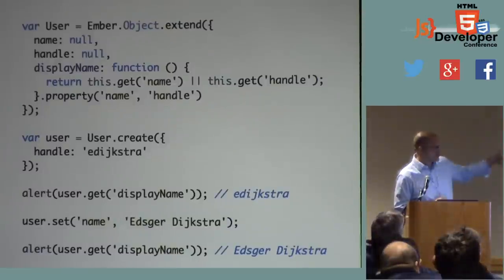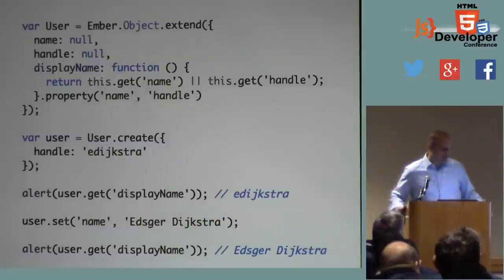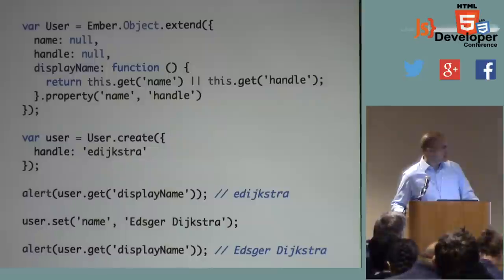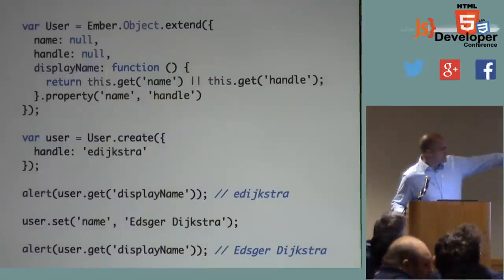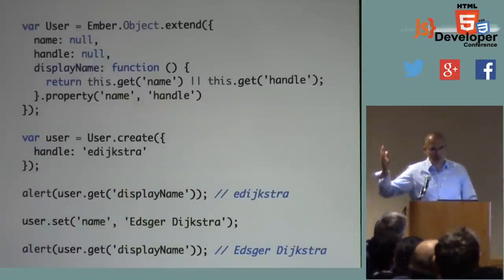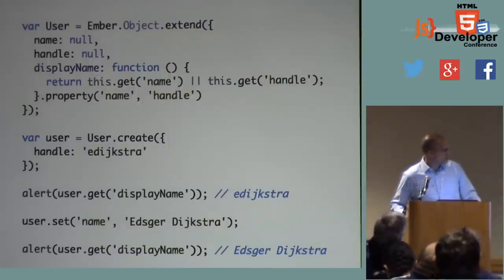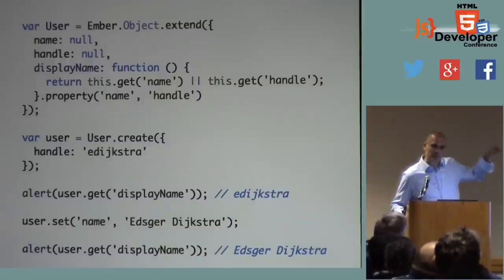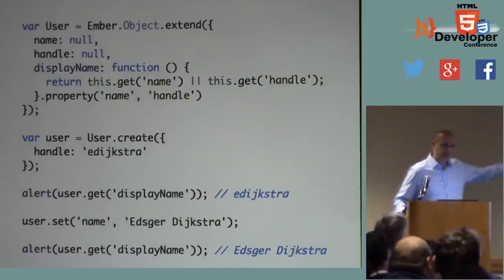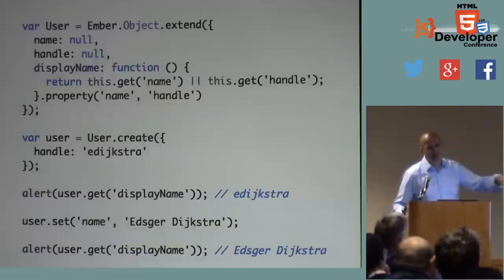In this example expanding on the earlier one, I've got a computed property called display name. Ember mixes in this property function to the function prototype — you can use Ember without extending native prototypes, but this is the most common way. Display name derives its value from the name and handle properties, so internally it sets up observers on those two properties. Whenever name or handle update, display name updates.